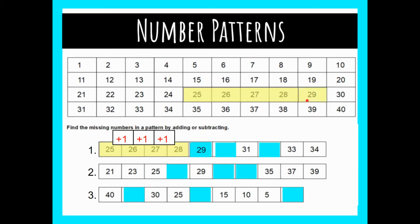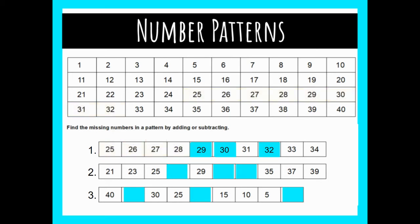Then I'm going to come down here to the next row. 31 was already given in the number pattern, but the next number would be 32. So I have solved the missing numbers by adding 1 to each number. Let's try another one.